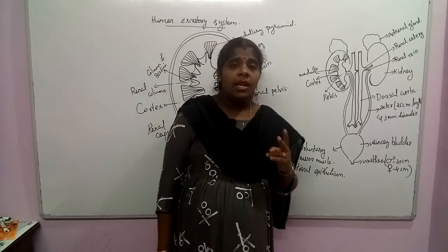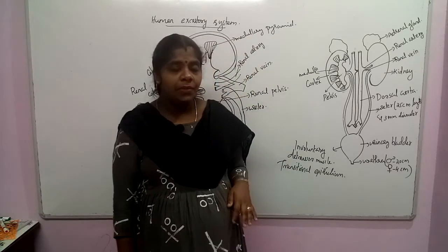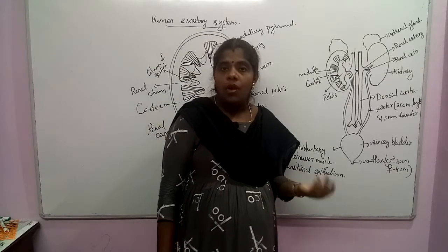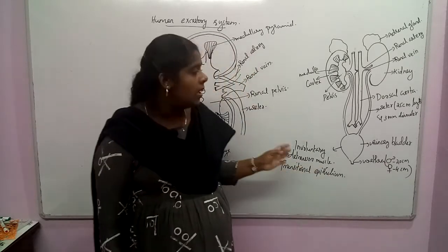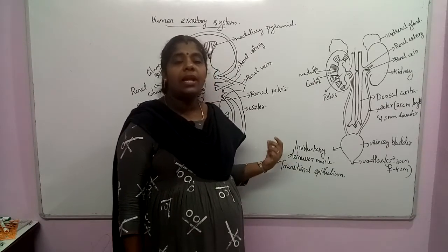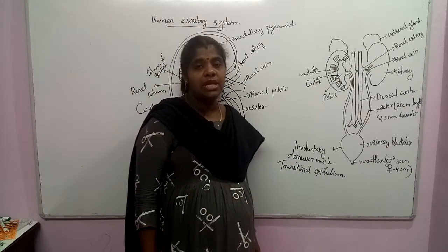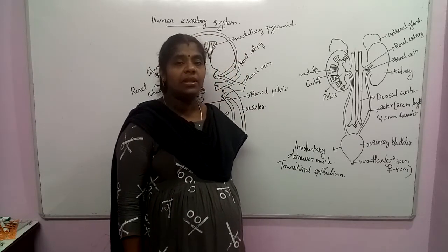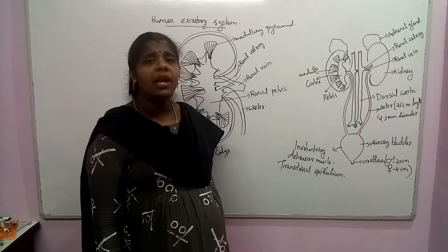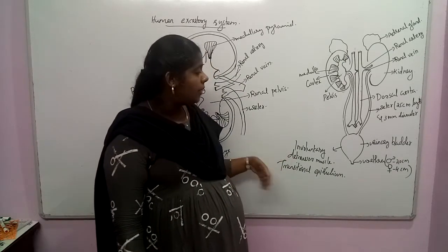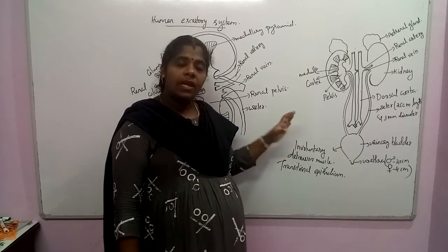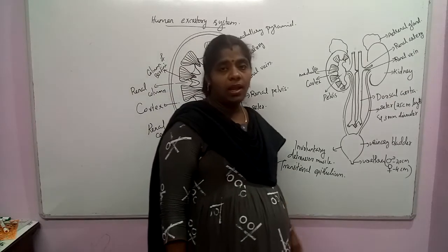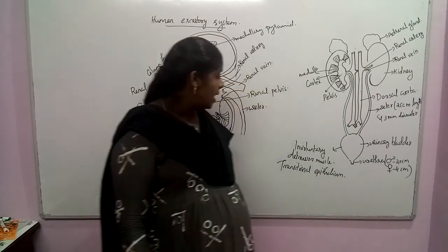The urethra has two sphincter muscles: an internal sphincter muscle which is involuntary, and an external sphincter muscle which is voluntary. When the urinary bladder contracts, the internal involuntary sphincter opens. The external voluntary sphincter allows us to hold urination until we can reach the toilet.